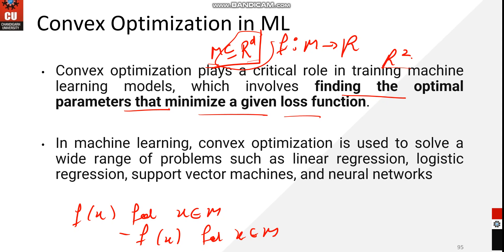In machine learning, we know that convex optimization is used to solve a wide range of problems like linear regression, logistic regression, support vector machines, and neural networks.